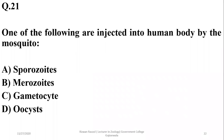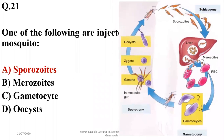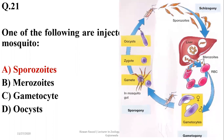Question twenty-one: which of the following is injected into the human body by the mosquito? The female Anopheles mosquito injects sporozoites into the human body. The female Anopheles mosquito is the primary or definitive host for Plasmodium. The sporozoites divide in liver cells and form merozoites, which are ultimately converted into gametocytes. The correct option is A.